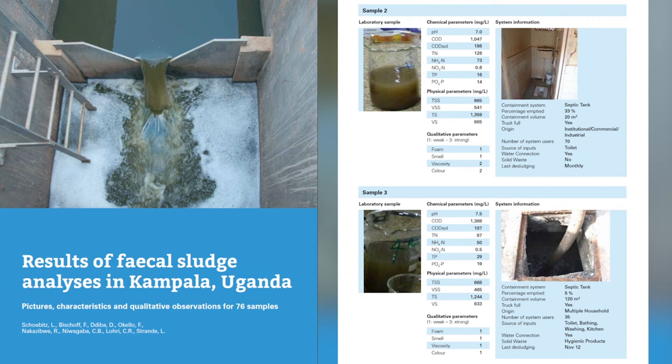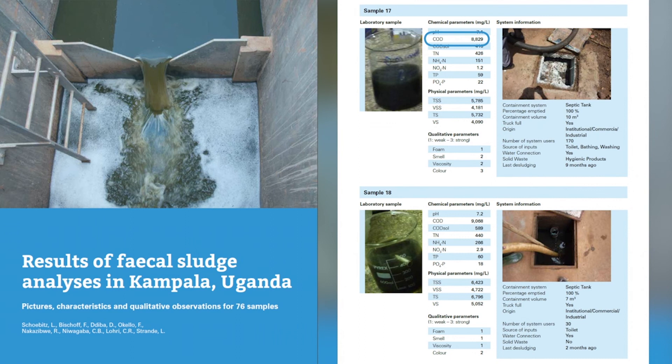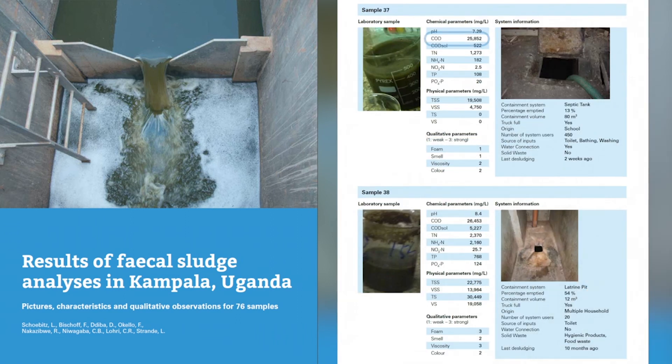You can see in these photos how as the COD concentration goes from 1,000 mg per liter to 9,000 mg per liter to 26,000 mg per liter, the visual appearance is also quite different. Qualitatively, you can already get a rough idea of characteristics based on appearance.